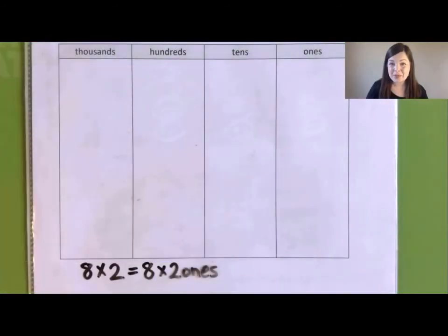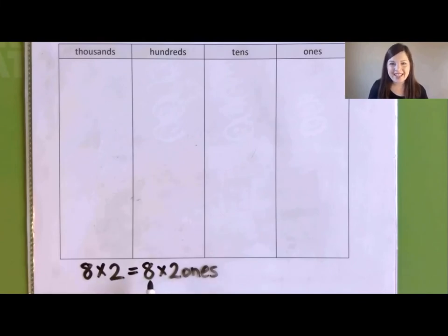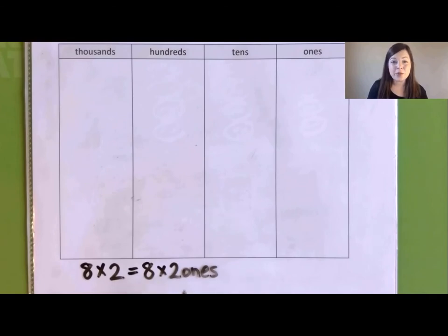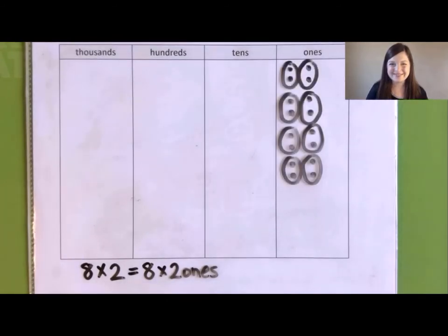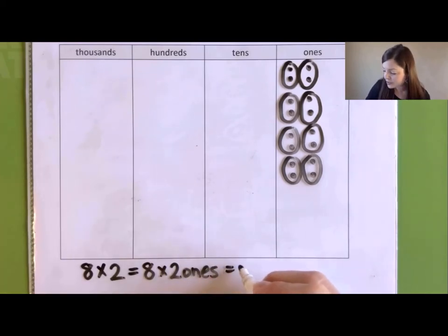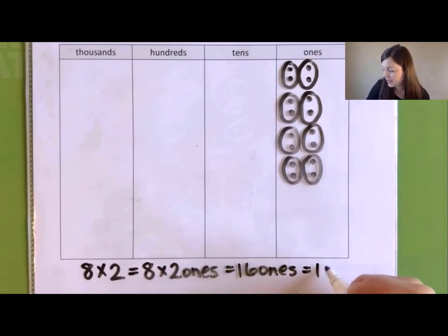Let's try another problem: 8 times 2, or in unit form we could say 8 times 2 ones. Pause the video and use discs to represent 8 times 2 ones on your place value chart, and circle each group of 2 ones. So 8 times 2 ones equals what? Remember to say the answer in unit form. 8 times 2 ones equals 16 ones, which in standard form is 16.